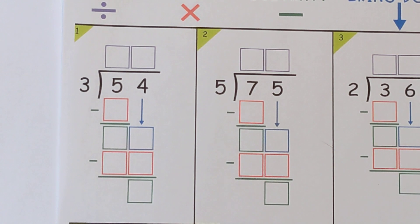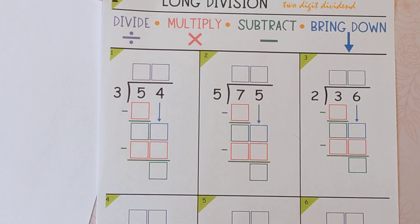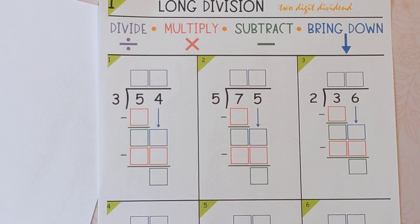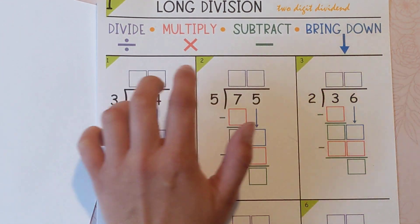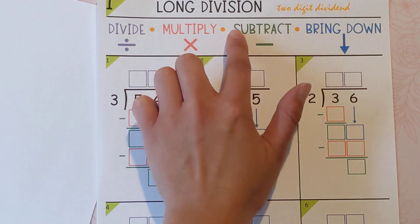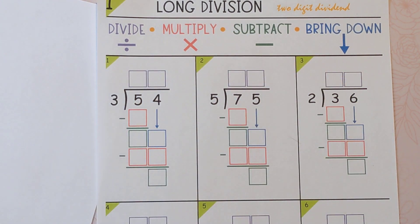I'm going to zoom out a little so you can see the four steps up there, and the way that I remember them is DMSB and I think, does McDonald's sell burgers? Of course they do, but that's how I remember the steps.